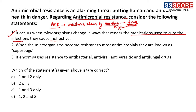Second statement: when microorganisms become resistant to most antimicrobials, they are known as superbugs. This statement is also correct. When microorganisms become resistant to most known antimicrobials, they are considered superbugs and will not respond to known medication — a combination of medicines may need to be used against them. Third statement: AMR encompasses resistance to antibacterial, antiviral, antiparasitic, and antifungal drugs. This is also correct.